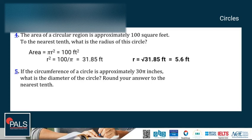So number four. The area formula is πr² = 100 square feet. Then, dividing both sides by pi, so we have r² = 100 divided by pi, which equals 31.85. Then the square root of 31.85 is 5.6. So the radius is 5.6 feet.